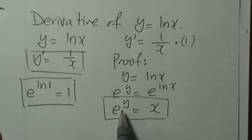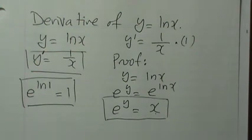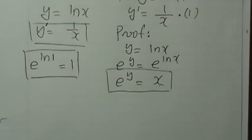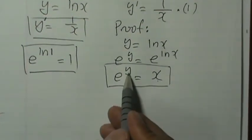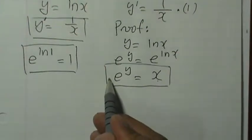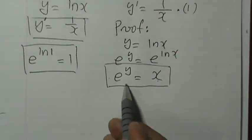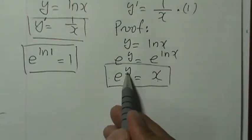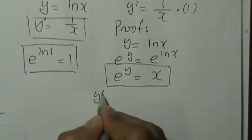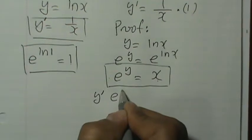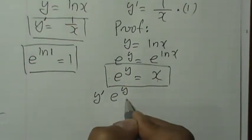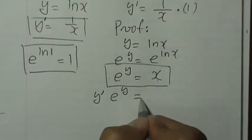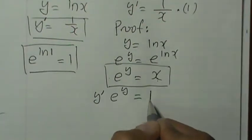So in order to find the derivative of e to the power of y equals x, the derivative of y would be y prime, and we rewrite as e to the power of y, because of the rules of this type of exponential equation, and equal to the derivative of x which is 1. Now, to get y prime by itself,